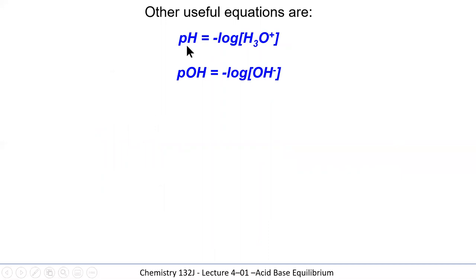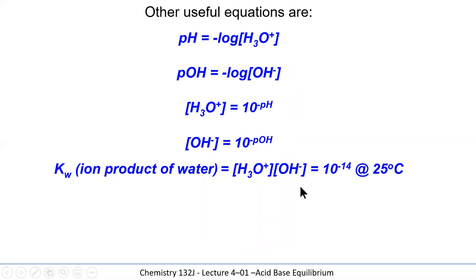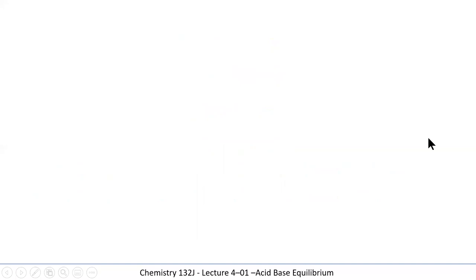Other useful equations: if pH is the minus log of hydronium, then pOH is the minus log of hydroxide ion. We can use pOH to describe a solution as well as pH. The hydroxide ion concentration equals 10 to the minus pOH. We have the equilibrium relationship Kw = [H₃O⁺][OH⁻] = 10⁻¹⁴ at 25°C. We can also generate the equation that pH + pOH = 14. So if a solution has a pH of 2, its pOH is 12.